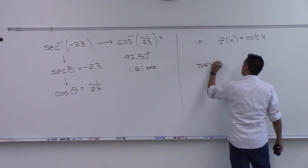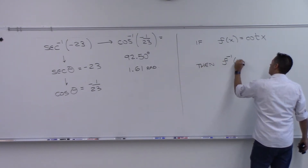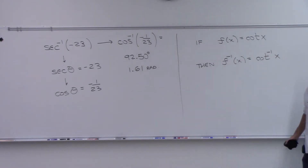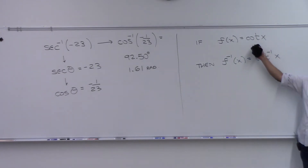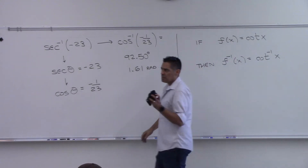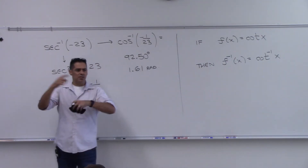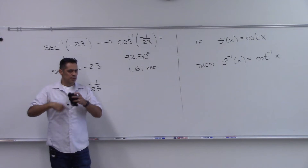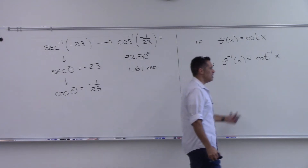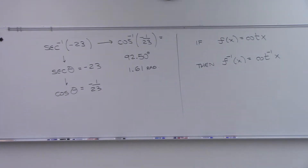The inverse of cotangent should be written as cotangent inverse of x. What about domain restrictions here? What was the domain restriction for cotangent — or for tangent? Because cotangent and tangent are just flipped. So are we going to keep the same domain restriction we had for tangent or not?